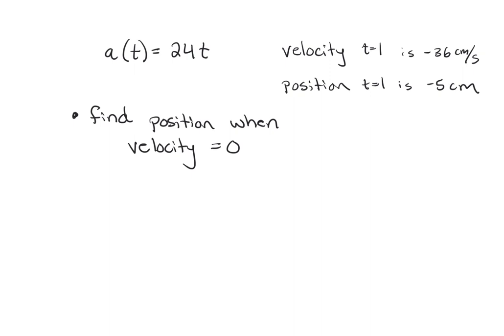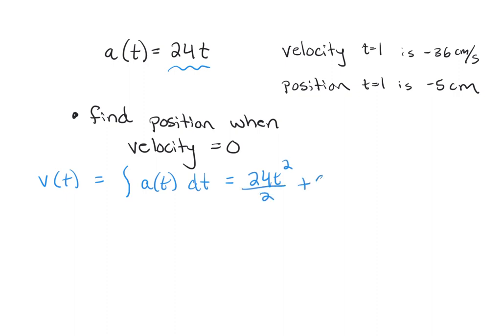Here is our second example. We're given an acceleration function of 24t, and additional information: velocity at t equals one is negative 36 centimeters per second, and position at t equals one is negative five centimeters. Our goal is to find the position when the velocity equals zero. Starting with acceleration, we find the velocity function by taking the integral: the antiderivative of 24t is 24t squared over two, plus C.